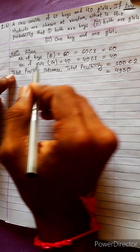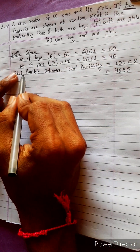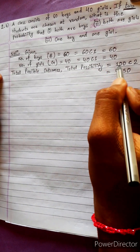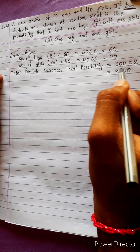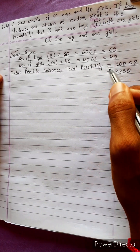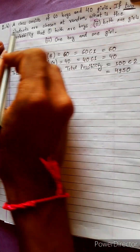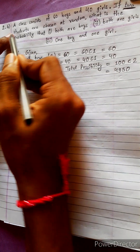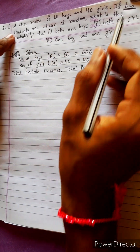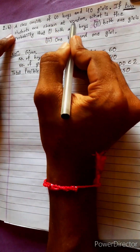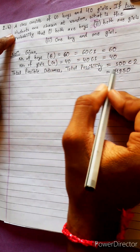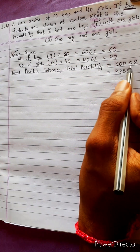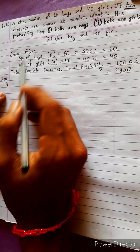People make a mistake here. For total number of possible outcomes, they write just 100. But 100 is not the correct outcome. Because two students are selected randomly, it should be 100C2 — combine with two.